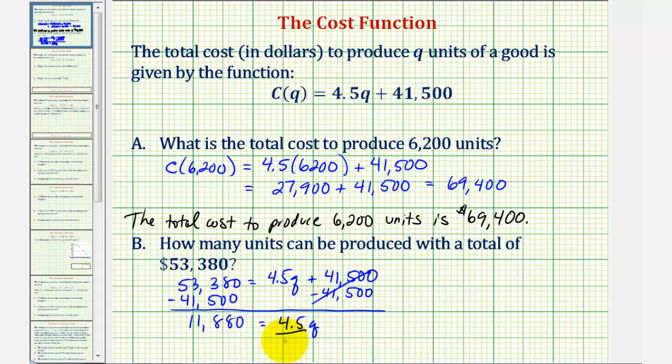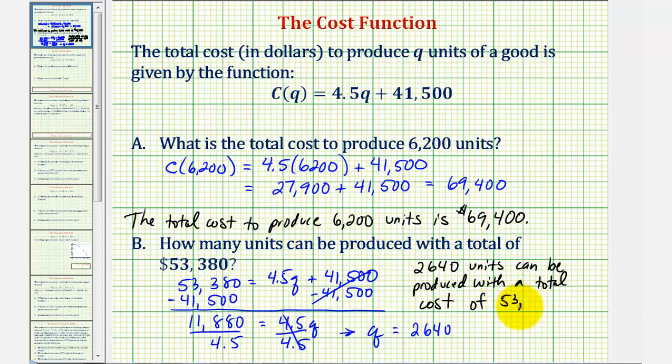And now for the last step, we divide both sides by 4.5, which gives us q equals this quotient here. 11,880 divided by 4.5 is equal to 2,640. Which means 2,640 units can be produced with a total cost of $53,380.